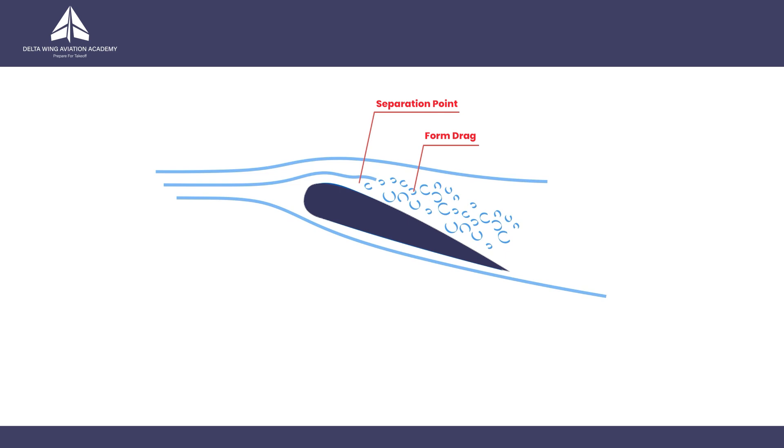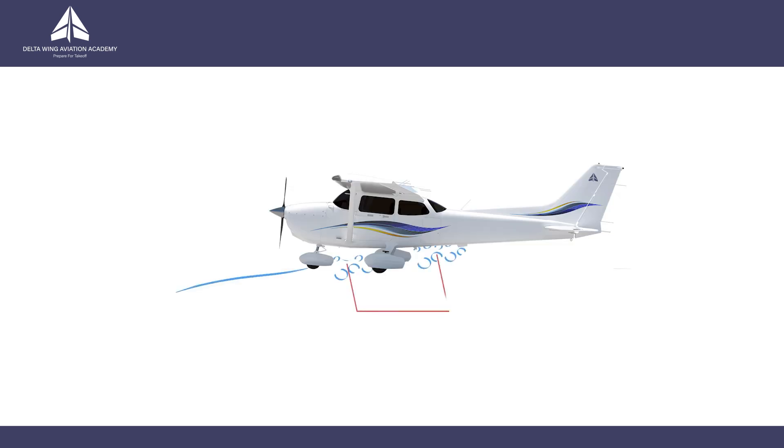Form drag is caused by disturbed airflow that's separated from the surface and spawned into turbulent wake. The more streamlined an object is, the less form drag it creates. So any obstruction to smooth airflow, such as dangling wheels, will produce form drag.